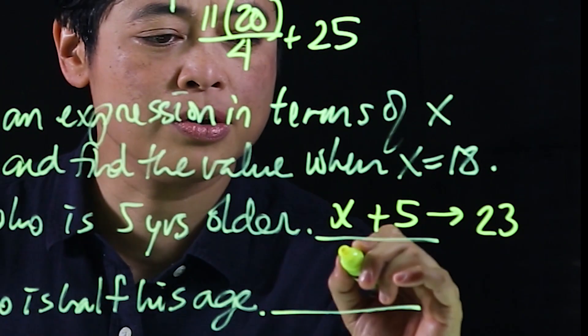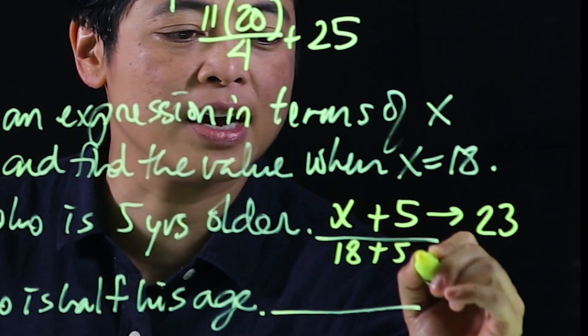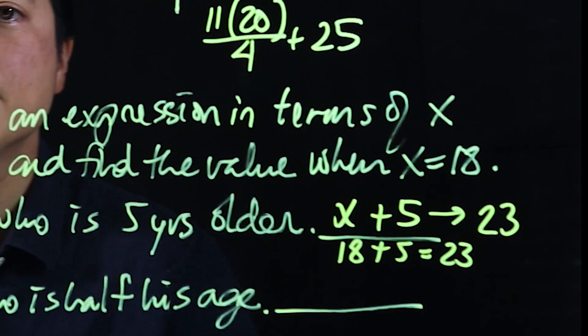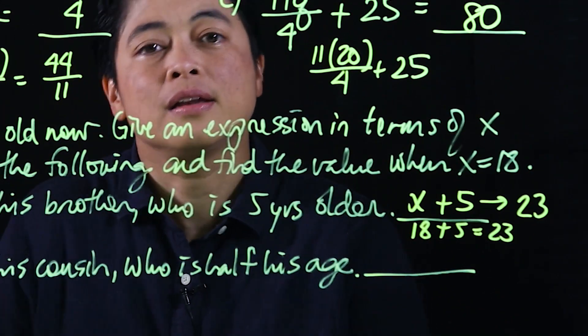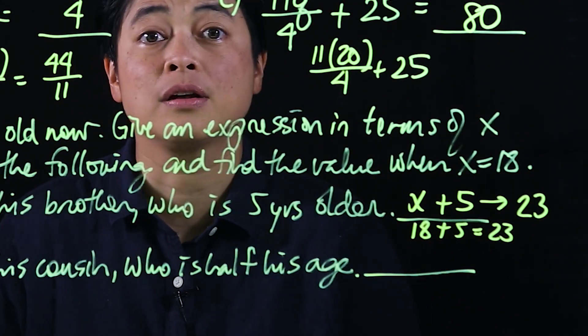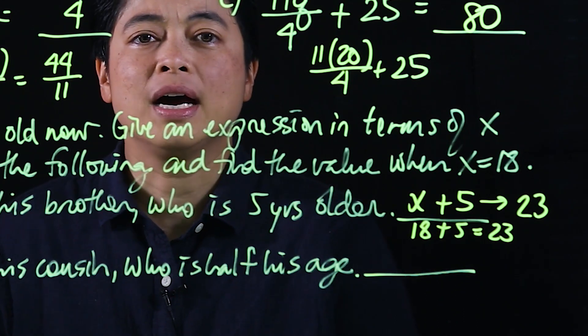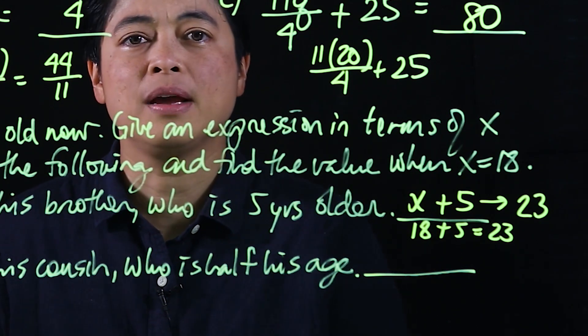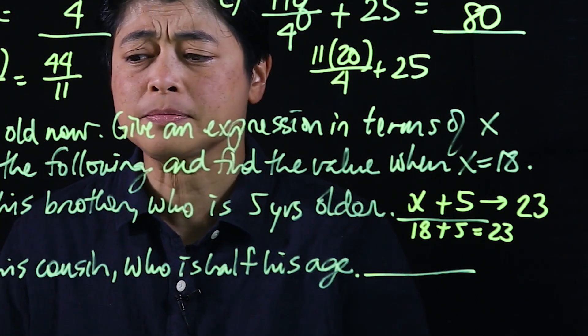So if you wish to, you can go 18 plus 5 equals 23. But if you can do it mentally, then you should be able to. These are not large numbers. So at this level, you should be able to do things mentally.